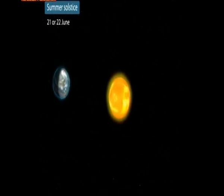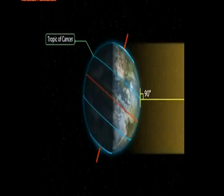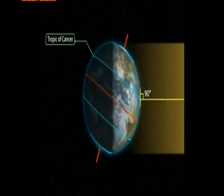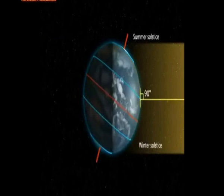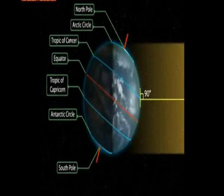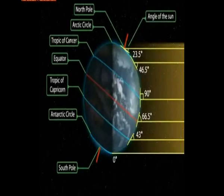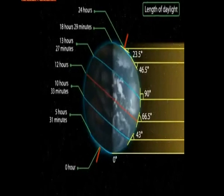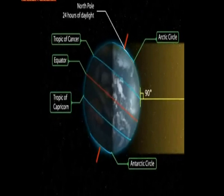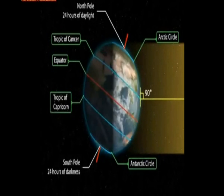Summer Solstice: On the 21st or 22nd of June, the overhead sun is over the Tropic of Cancer, which receives the largest amount of solar radiation. At this time, the northern hemisphere is in the summer solstice while the southern hemisphere is in the winter solstice. The angle of the sun decreases towards the poles. On this day, the length of daytime in the northern hemisphere is the longest in the year, while that of the southern hemisphere is the shortest. There are 24 hours of daylight at the Arctic Circle and 24 hours of darkness at the Antarctic Circle.